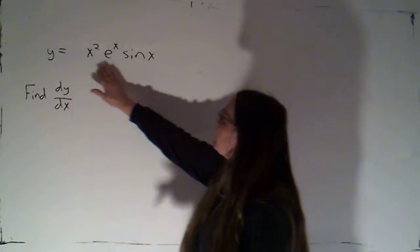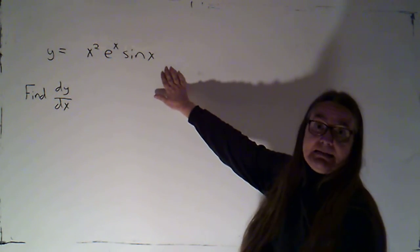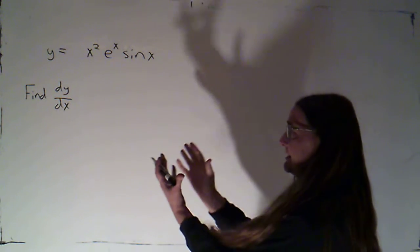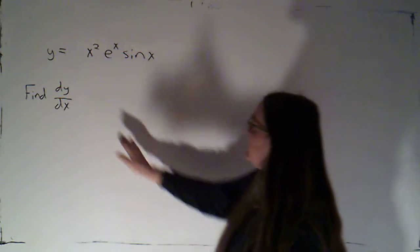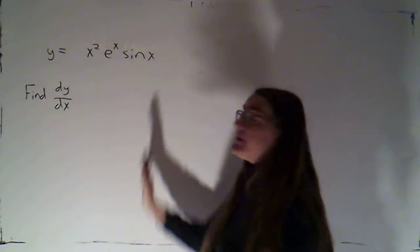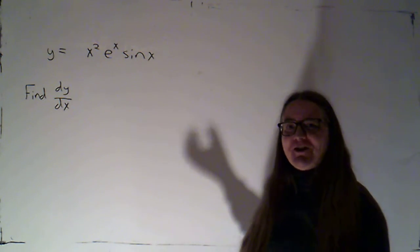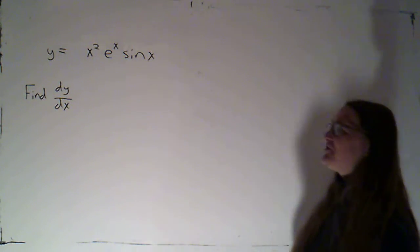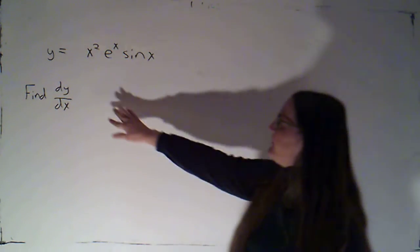Notice here y is a product of three things. And I can't simplify the multiplication because those three things are three different types of functions. I've got a power function, an exponential function, and a trig function. And we're being asked to find the derivative.